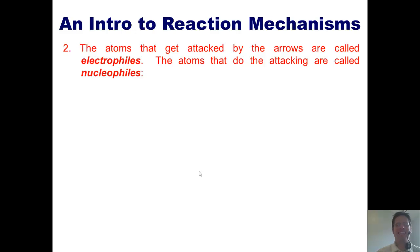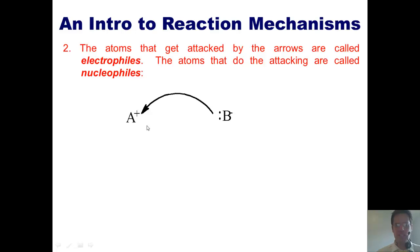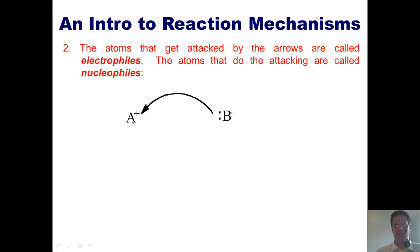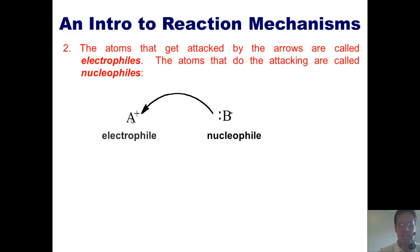In our previous example, we see that atom A, which is electron-deficient, wants electrons — it likes electrons — therefore it's an electrophile. Whereas the atom that does the attacking, like the archer, is called the nucleophile.